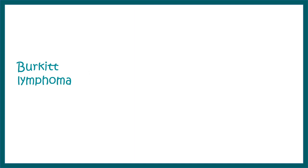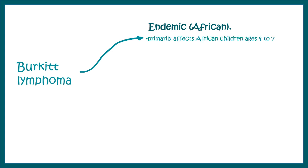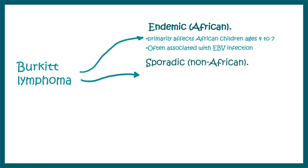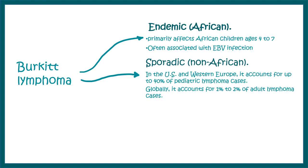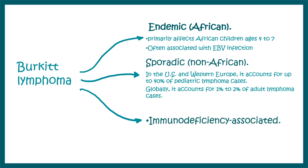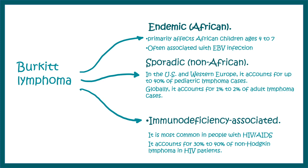Burkitt lymphoma is subclassified into three types. The endemic, or African, version primarily affects children aged 4 to 7 and is associated with Epstein-Barr virus infection. The sporadic version is the non-African form found in the US and Western Europe, accounting for 1 to 2% of adult lymphoma cases globally. The third type is immunodeficiency-associated, common in patients with SCID or AIDS — 30 to 40% of non-Hodgkin lymphoma in HIV patients is Burkitt lymphoma.